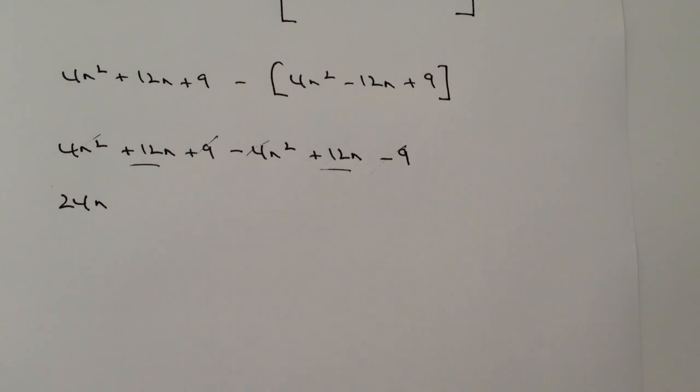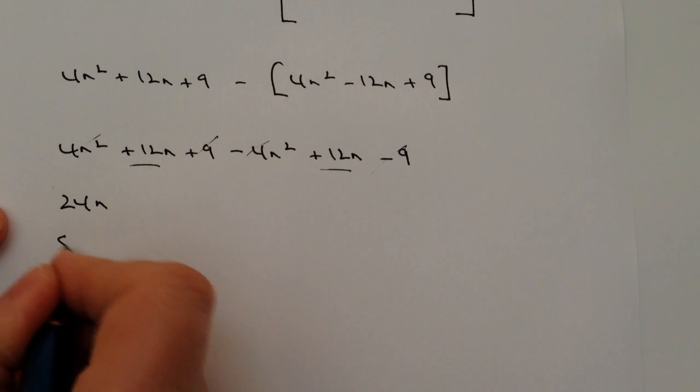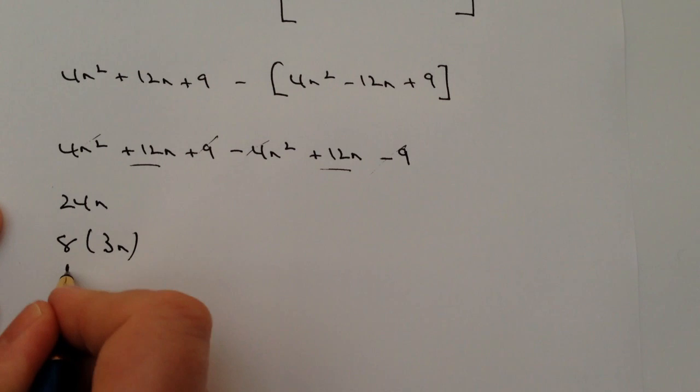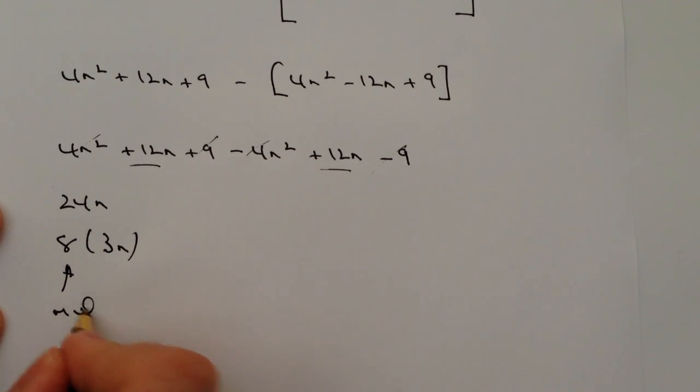Well, 24n, if I factorize that into something like 8 times 3n, that shows that it is a multiple of 8. And that would answer the question.